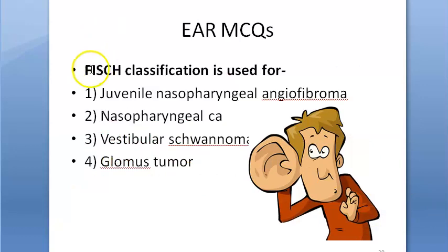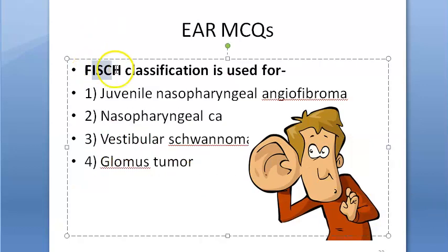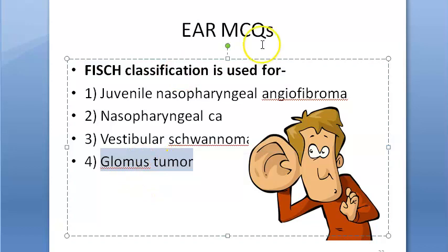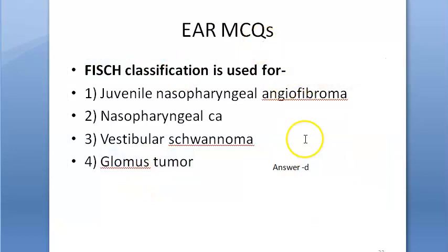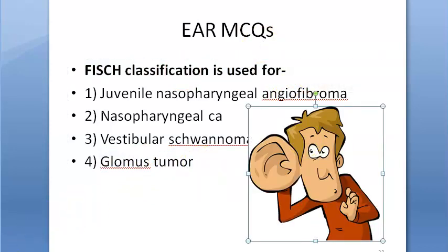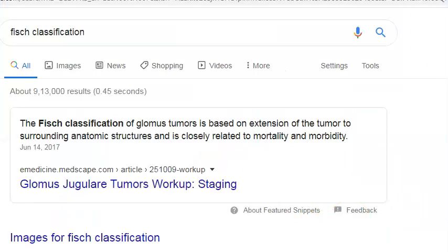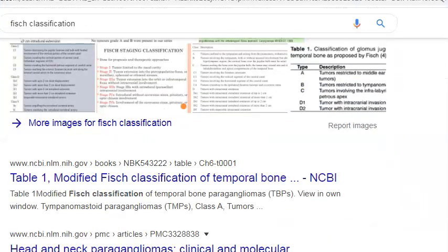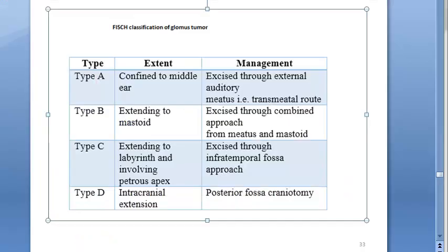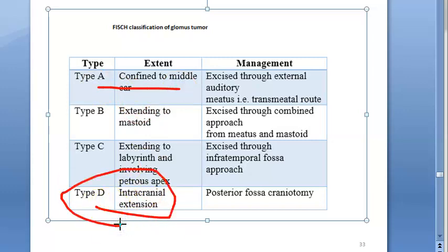Fisch classification is used for glomus tumor. In this classification, Type A is confined to the middle ear, Type B has extended further, and Type D has reached intracranial extension.